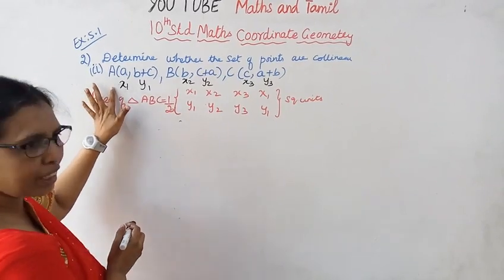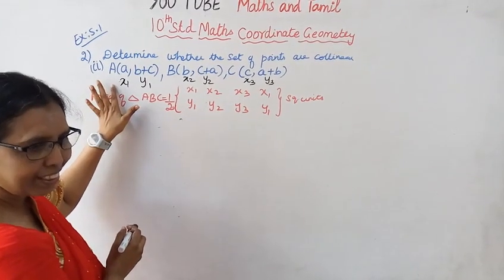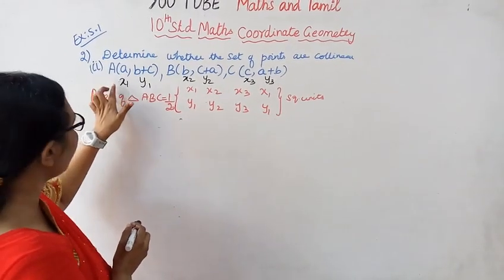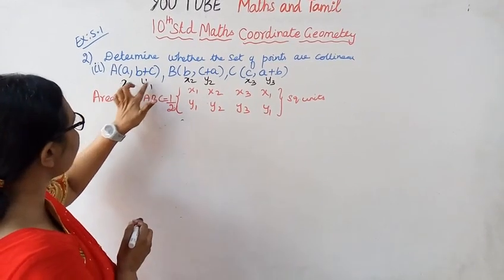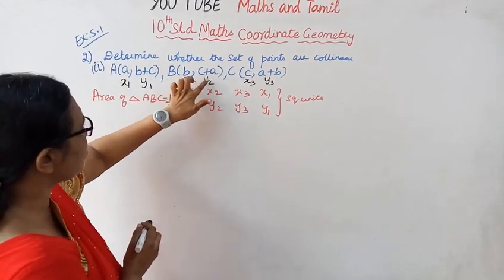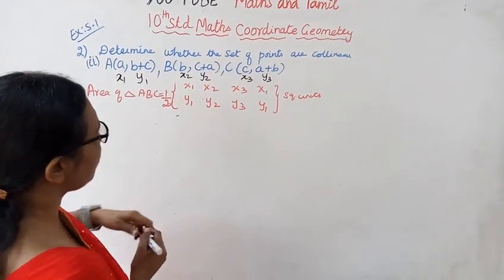The points given are number 2: point A is (A, B+C), point B is (B, C+A), and point C is (C, A+B).